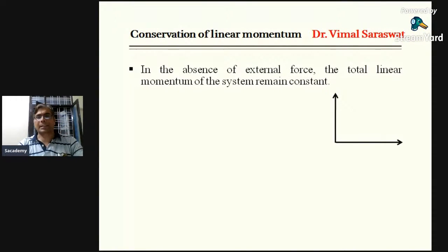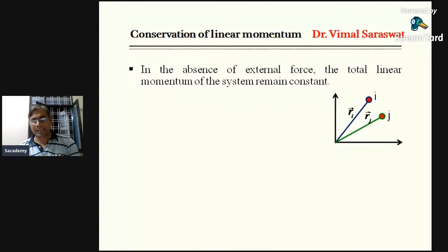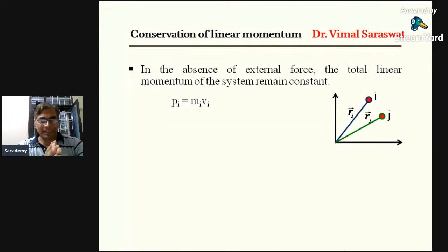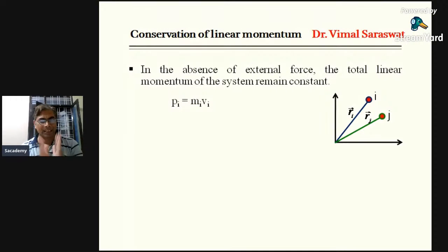Here we are showing a system. This is a particle represented by i, and its position vector is r_i. This is another particle represented by j, and its position vector is r_j. The linear momentum of particle i is p_i, where m_i is the mass of the i-th particle and v_i is its velocity. The product of mass and velocity is known as linear momentum, so p_i = m_i × v_i.